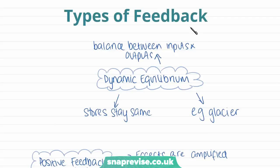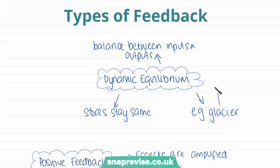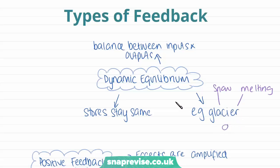When learning about systems and processes, it's also really important to learn about feedback. Feedback is the relationship between the inputs and outputs — almost like the balance between them in the system. Where we have no feedback, we call this dynamic equilibrium, which is where the inputs are equal to the outputs, so the stores stay the same and don't increase or decrease. An example is a glacier, which might have an input of snow and an output of melting. Dynamic equilibrium means the glacier stays the same size because there is an equal amount of snowfall and melting taking place — the overall net gain is zero.